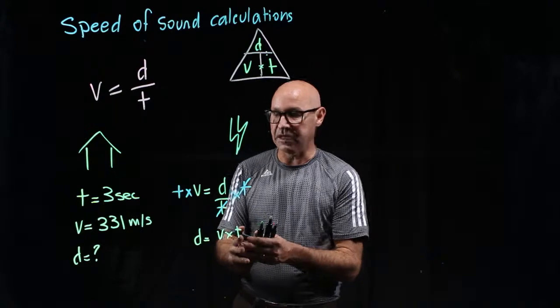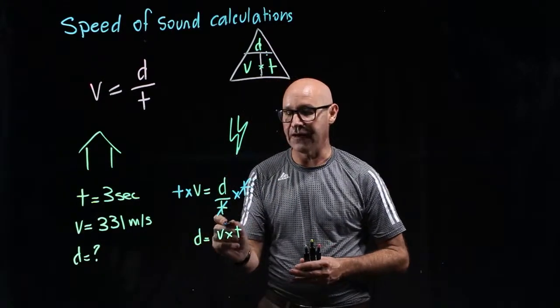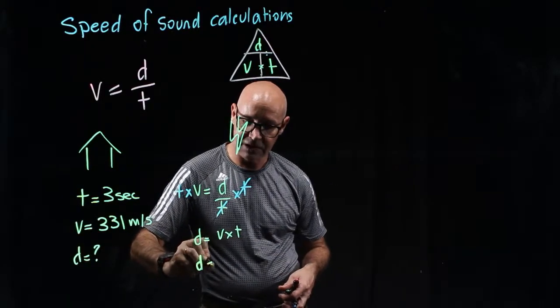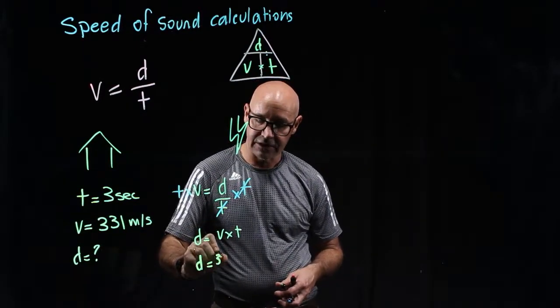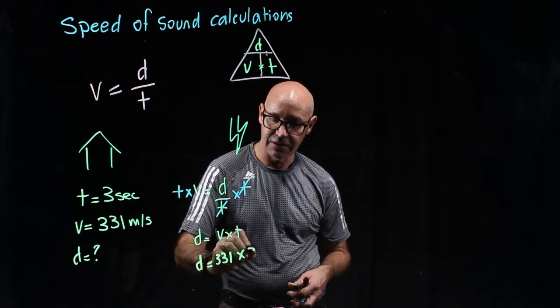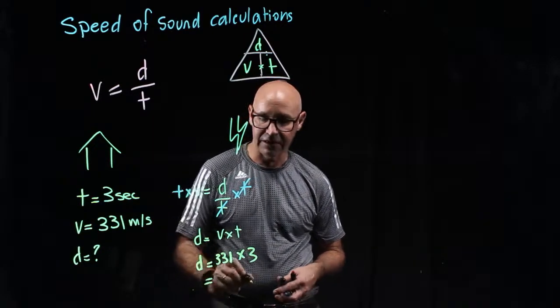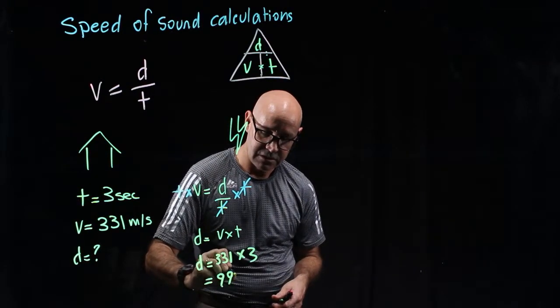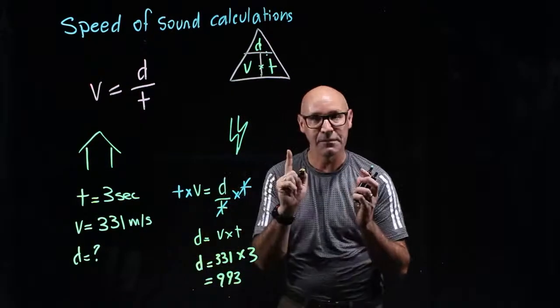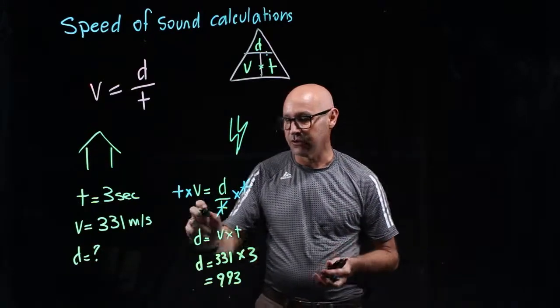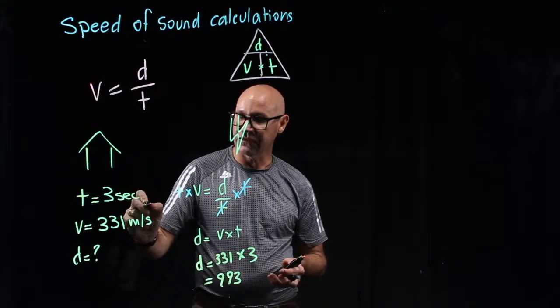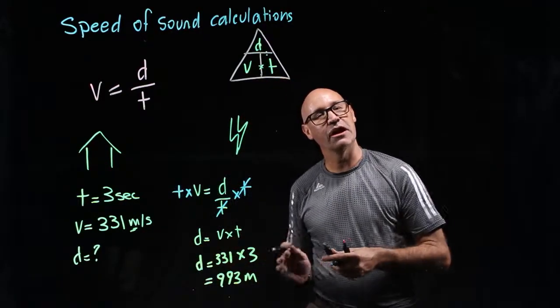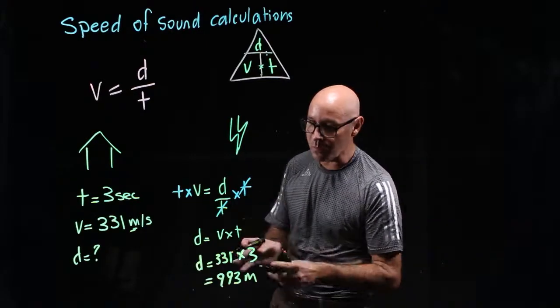Now, all we need to do is substitute our values for these. So, D equals 331 times 3, and that is 993. Now, we need to think about what is our unit. So, we had metres and seconds, so obviously our unit is metres. 993 metres, that's almost a kilometre.